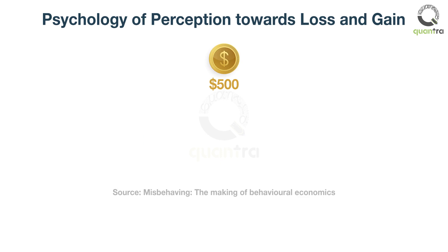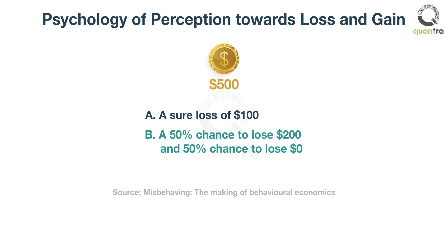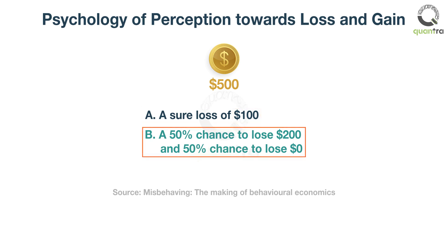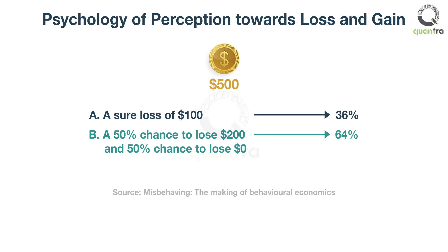Let's suppose you are richer by $500 than you are today. Now you are offered two options. Option A entails a sure loss of $100. Option B means a 50% chance to lose $200 and a 50% chance to lose $0. Logically, if you take option A, you have restricted your loss to $100. Taking option B means you are risking more money just to have a chance to get back to zero. Although, when this experiment was conducted in real life, 64% selected option B. This shows that when it comes to losses, we tend to misjudge and become risk seekers.